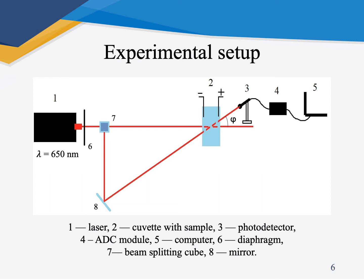In our study, to determine the parameters of the particles, we use the following experimental setup. The main structural elements are shown in this figure. The signal from the ADC converter is transmitted to a computer for processing. A laser radiation source is used as the light source. The setup also includes a diaphragm, a beam splitting cube, and a mirror for guiding the reflected beam.